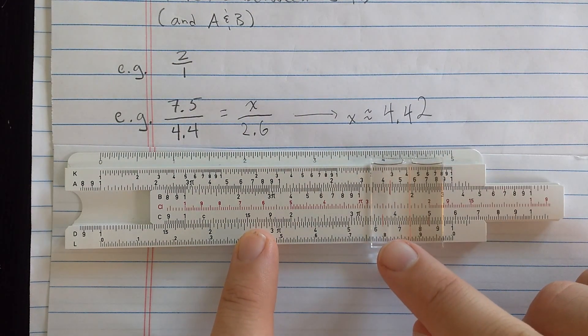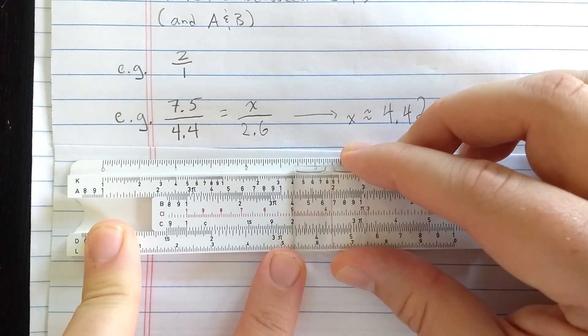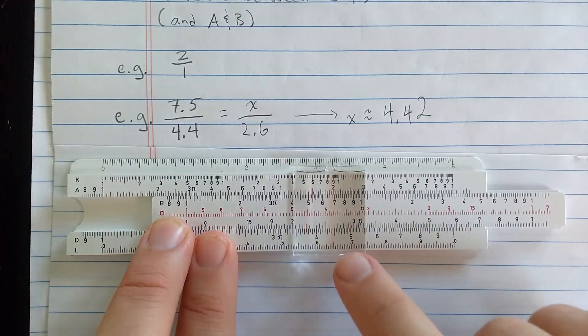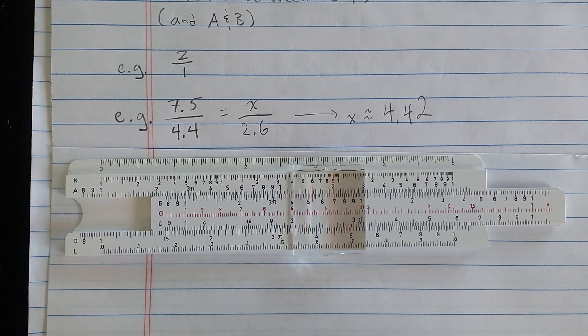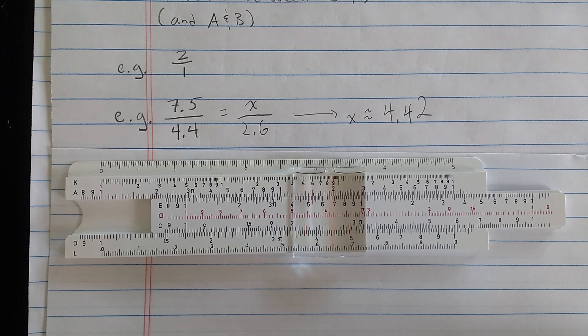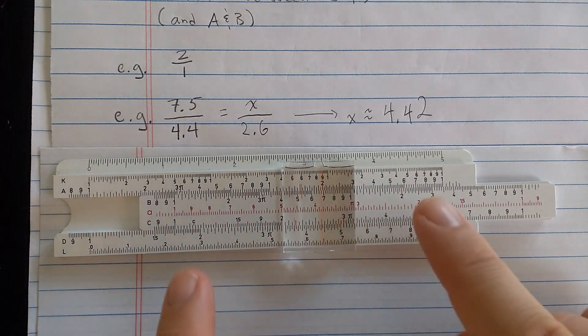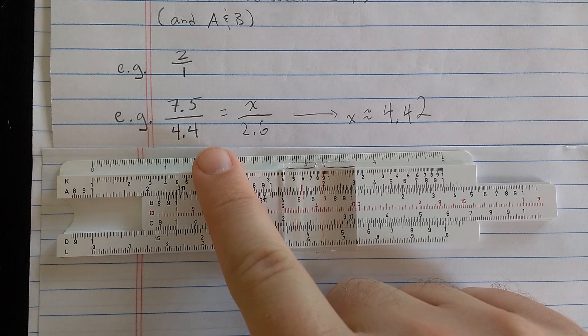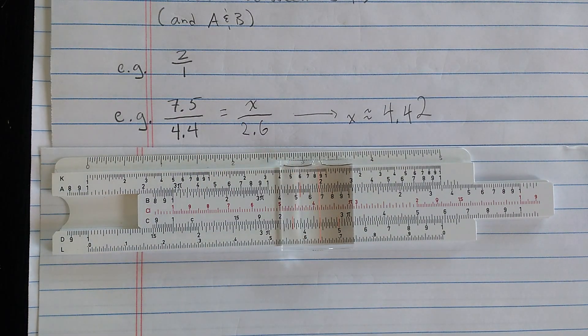So what I want to do is I want to find the 2.6 on the C scale. Here's 2.5, 2.6. Okay? And I estimated the result on the D scale to be about 4.42. Now, of course, that last digit is an estimate.